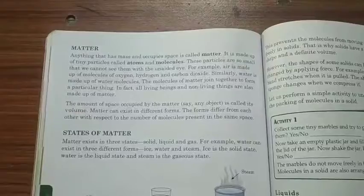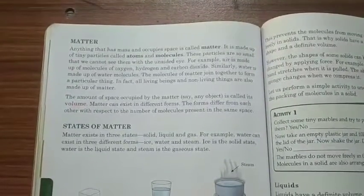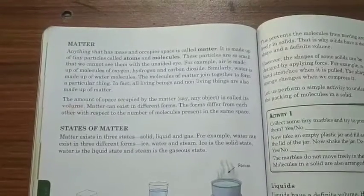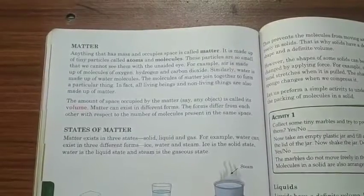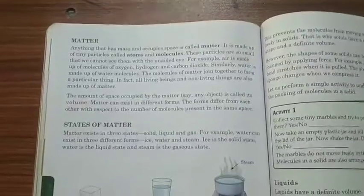The amount of space occupied by the matter or any object is called its volume. Matter can exist in different forms with respect to the number of molecules present in the same space.